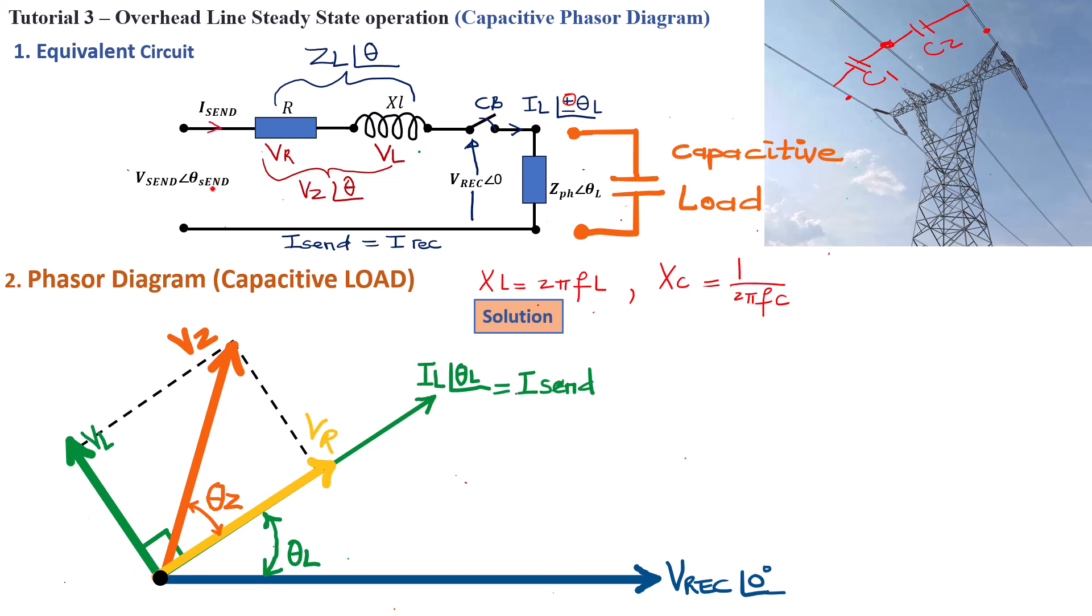Now we need the sending end voltage. We know that the sending end voltage is going to be slightly higher than the receiving end voltage. This is because of the power loss across the transmission line. So there is a voltage drop across the transmission line. That voltage drop must be deducted from the sending end voltage to get the receiving end voltage V-rec.